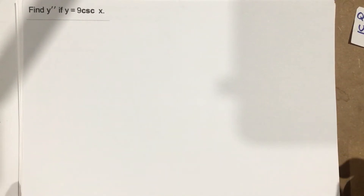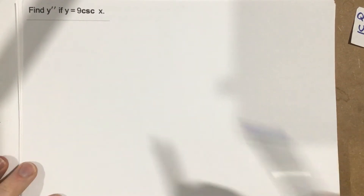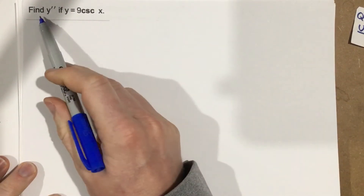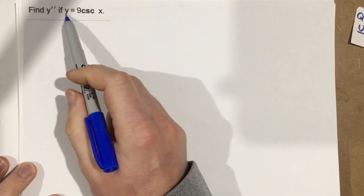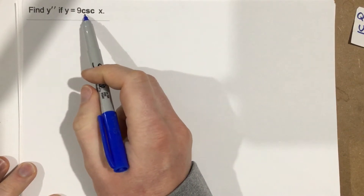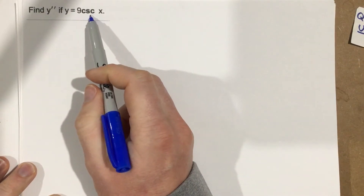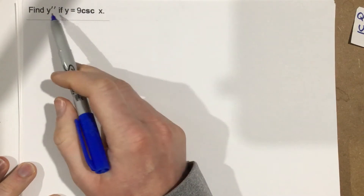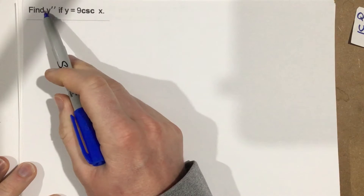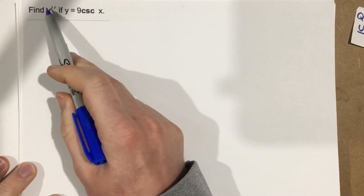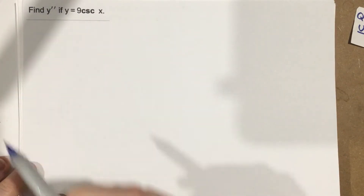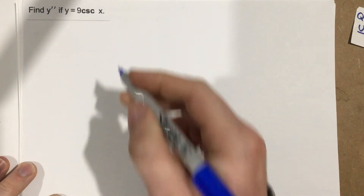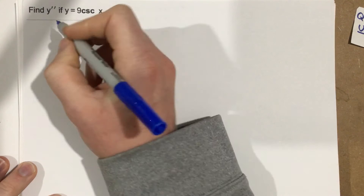This is problem number 11 from section 3.5. In this problem it says find y double prime if y equals 9 cosecant x. So this is the second derivative — they want us to find the first derivative, then the second derivative. Let's go ahead and start.